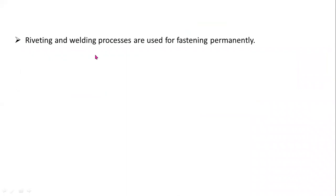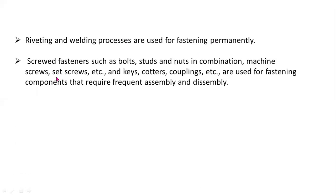Riveting, brazing, soldering, and welding processes are used for fastening permanently. Screwed fasteners such as bolts, studs, nuts in combination with machine screws, set screws, keys, quarter joints, and shaft couplings are used for fastening components that require frequent assembly and disassembly.